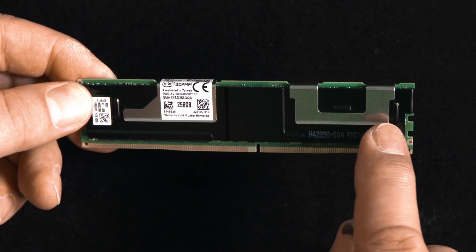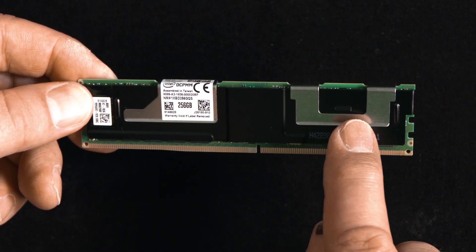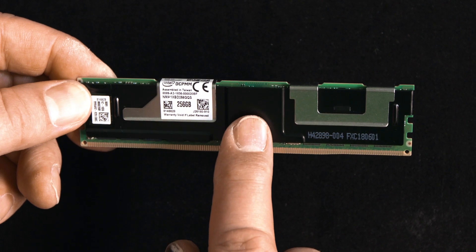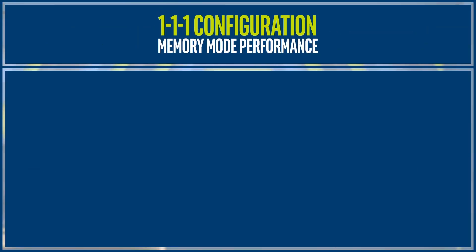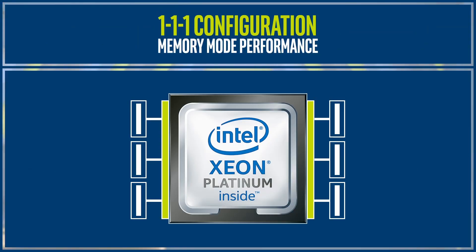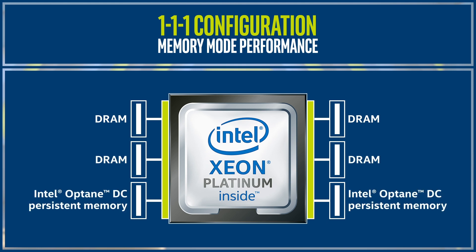You can spot the Optane modules by the silver clips and the integrated heat spreader. In a 1-1-1 configuration, you can only populate DRAM on two of the three channels for each memory controller. This limits the total bandwidth, so the 1-1-1 has the greatest risk of performance degradation.